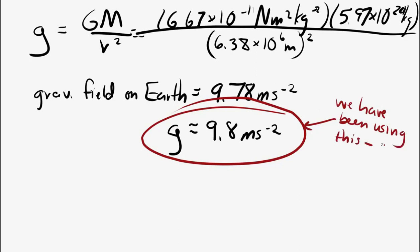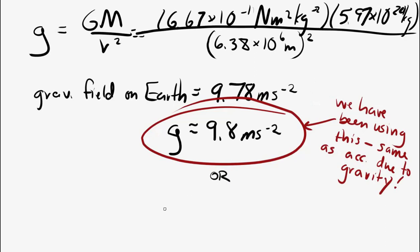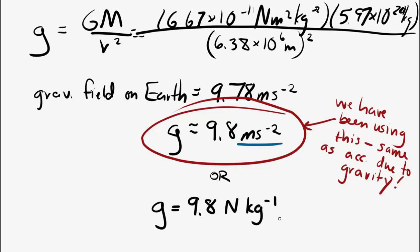There's another way to write the units. Gravitational field strength is force per mass, so the units can be written as newtons per kilogram. You have two options for correct SI units for gravitational field strength: meters per second squared, or newtons per kilogram.